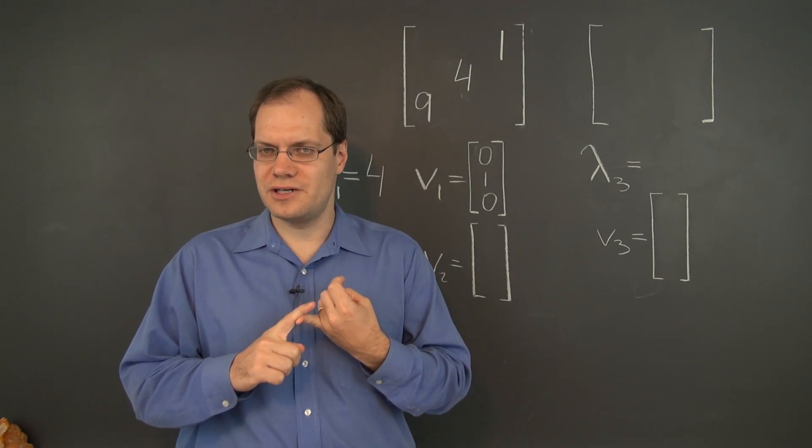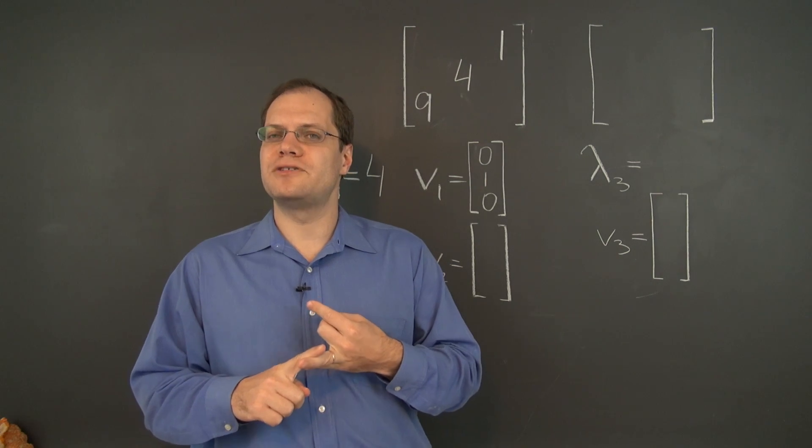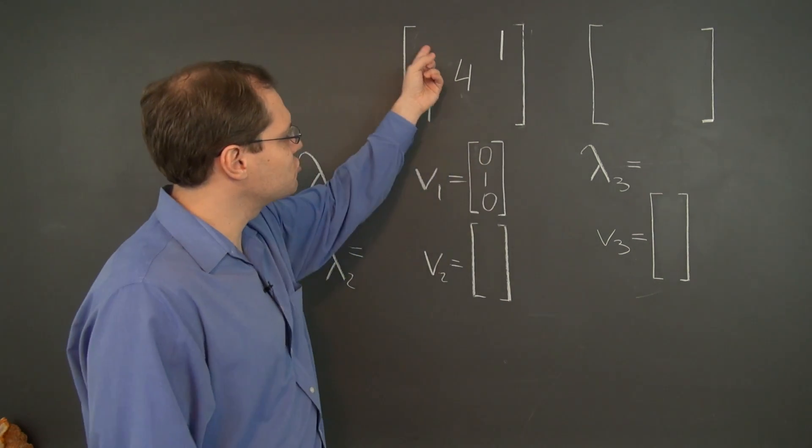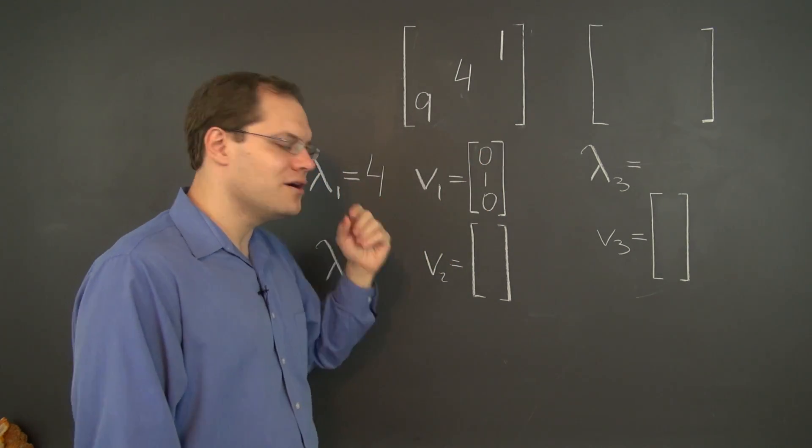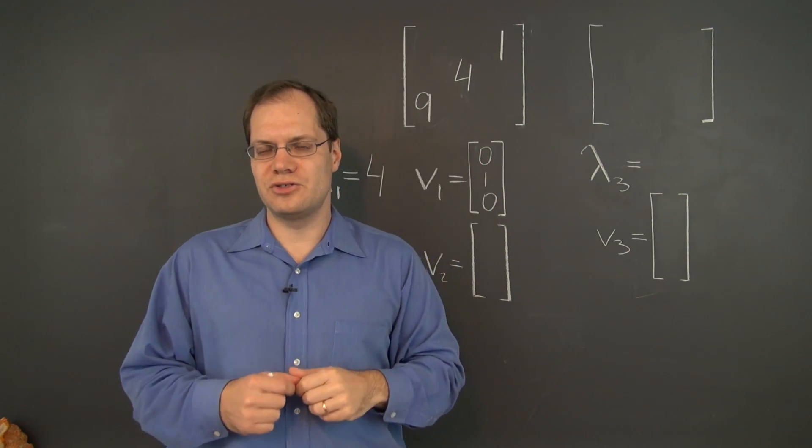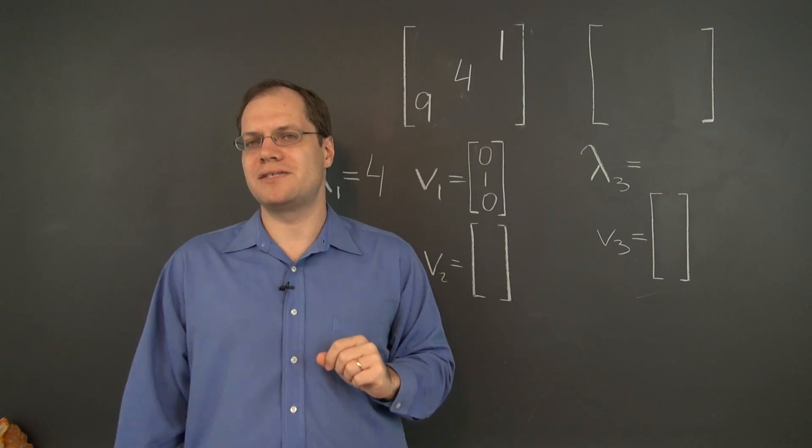First of all, we'll get their sum from the trace and their product from the determinant. And so the trace of this matrix is four, this eigenvalue is four, so the sum of the remaining two is zero. So they're opposites of each other.